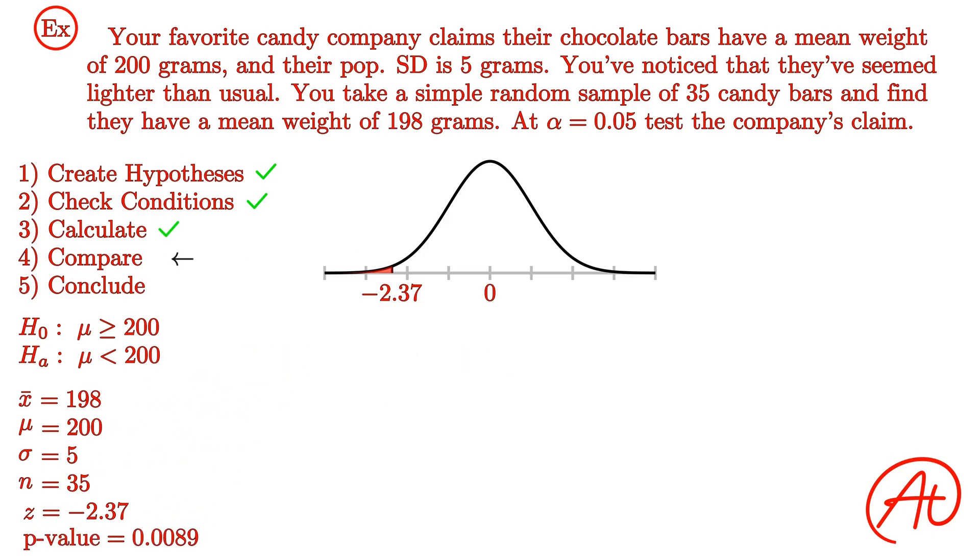Now that we have our test statistic and p-value, we can compare these to our critical value or alpha value. As a reminder from my previous video, to make this comparison, you can either compare your test statistic to your critical value, or your p-value to your alpha value. Since we have our alpha value given in the problem, and we just calculated our p-value, let's compare those two. It works out the same no matter which way you do it, so it doesn't really matter. Okay, to compare our p and alpha values, we just need to determine which one is bigger or smaller. With a p-value of 0.0089 and an alpha value of 0.05, the p-value is less than the alpha value.